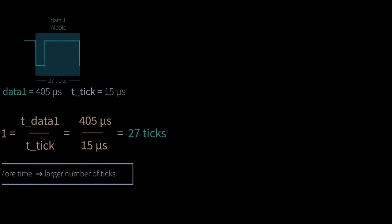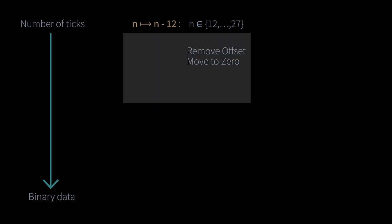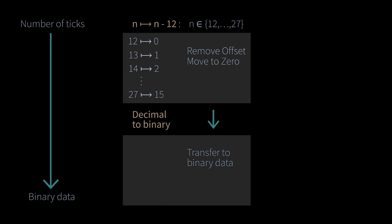Now this number of ticks has to be converted into binary data. Since the minimum time for a data nibble is 180 microseconds and the maximum time is 405 microseconds, the number of ticks results in numerical values ranging from 12 to 27. For the shift of the offset to 0, the value 12 therefore has to be subtracted from the number of ticks. The result of this shift now can be converted from a decimal to a binary value.